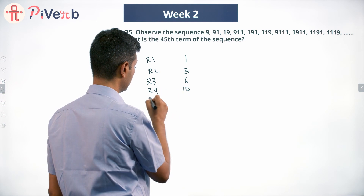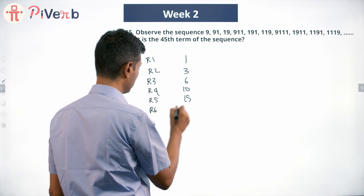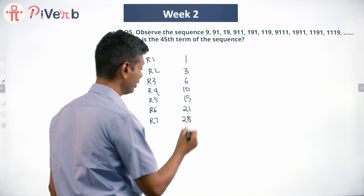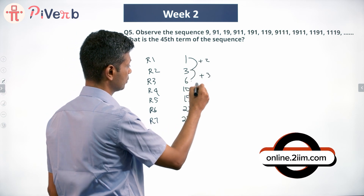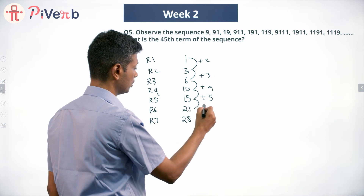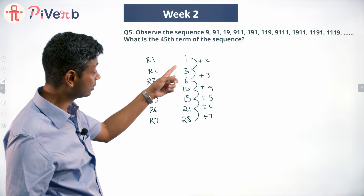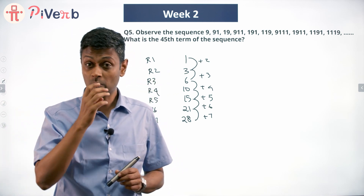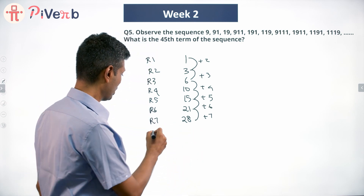End of row six: 21. End of row seven: 28. These are 1 + 2 + 3 + 4 + 5 + 6 + 7. The cumulative totals — 1, 3, 6, 10, 15, 21, 28 — are called something. I want you to find out what they are called. Row eight ends at 36.